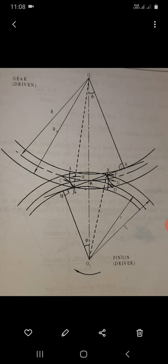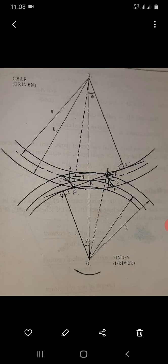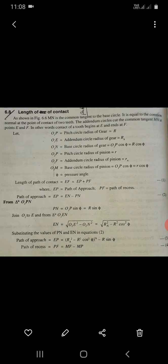Join O1 to E. From triangle O1EN, EN is square root of O1E squared minus O1N squared, which equals square root of Ra squared minus Rb squared. Substituting the values of PN and EN, we have path of approach EP equals square root of Ra squared minus Rb squared, minus R sin phi.